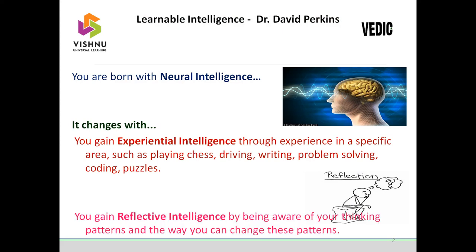Reflective intelligence: everyone is aware of their own thinking patterns and they track how it changes and how they are connected with each and every phenomenon. Everyone starts introspecting themselves. When the combination of experiential intelligence and reflective intelligence becomes more and more, learnable intelligence becomes more, learning becomes simple, and learning becomes easy.